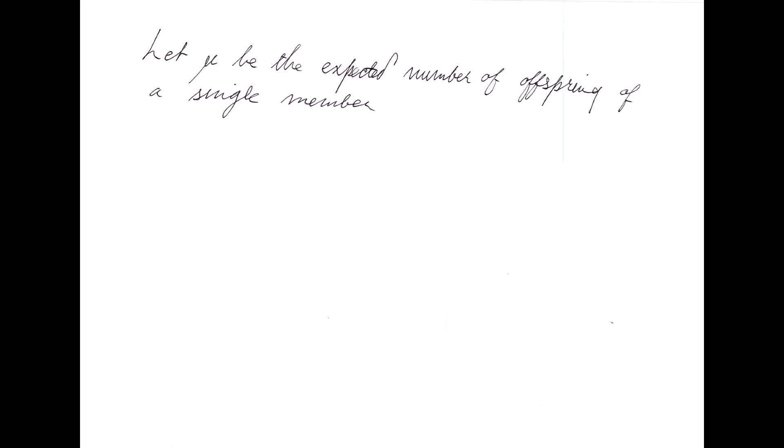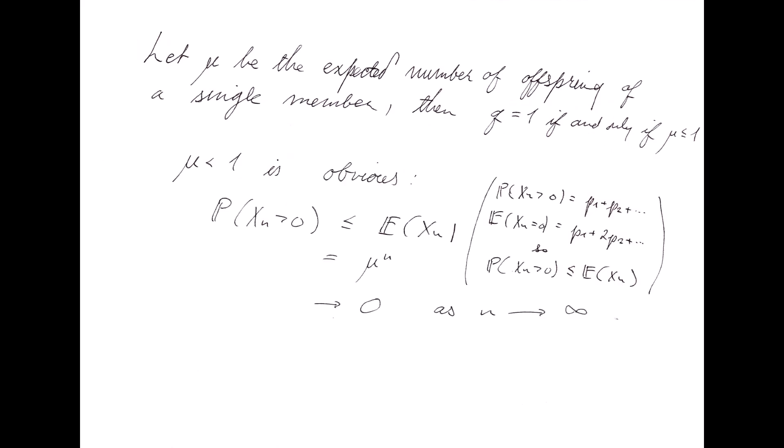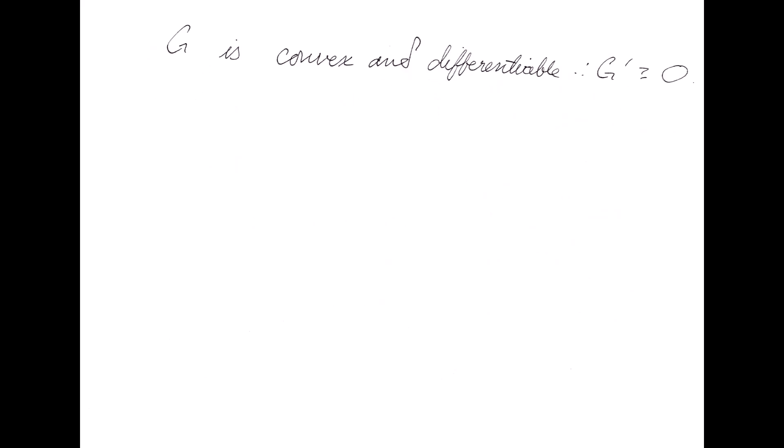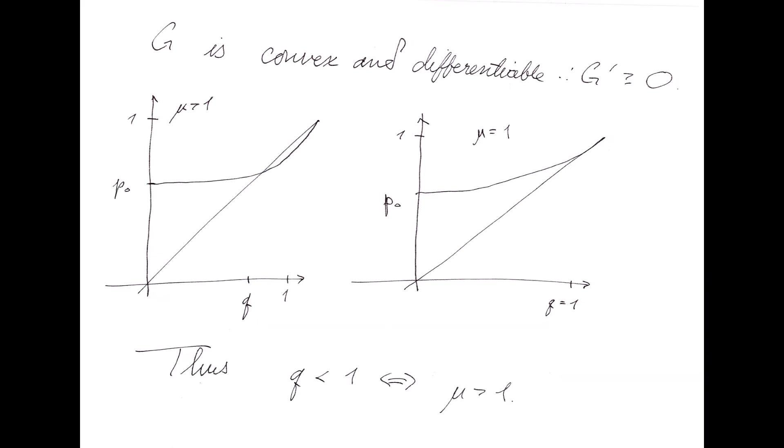Now, if mu is the expected number of offspring of a single member, we have that q equals 1 if and only if mu is less than or equal to 1. The case mu is less than 1 is straightforward using our previous result. By looking at the power series coefficients, we can deduce that g is convex. Note also that the slope of g at 1 is precisely mu, so that we can deduce that x equals g of x has a root smaller than 1 precisely when mu is greater than 1 by looking at g's graph.